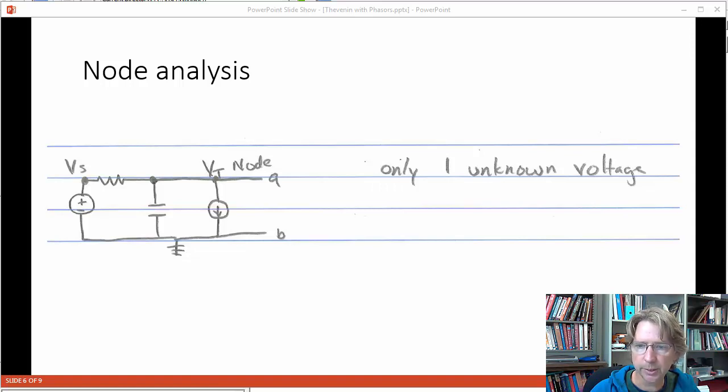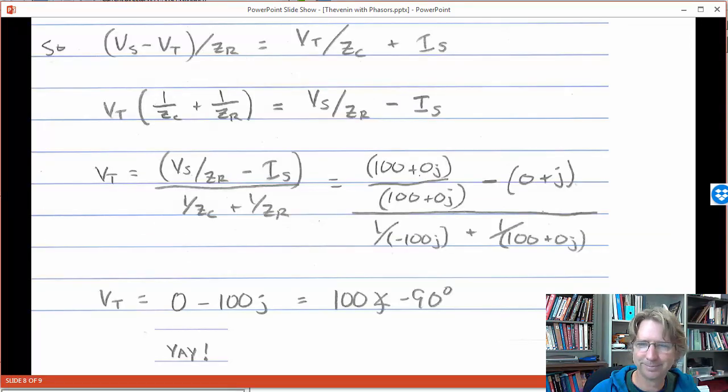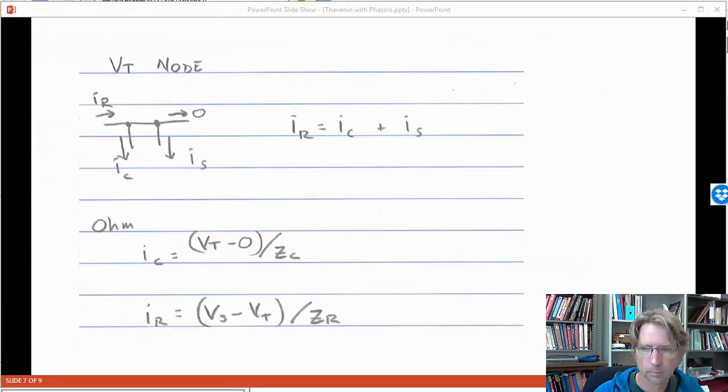So we're going to use just a node analysis, regular steps. So here we've got the VT node drawn, this little free body diagram. This is our only unknown voltage. Label the currents going in and out. So we've got a current through a resistor, current through a capacitor, and the current source right here, IS.